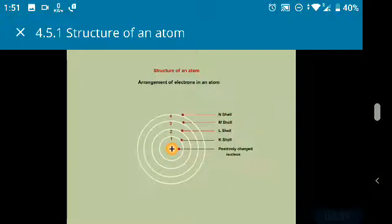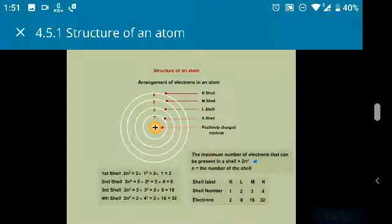The maximum number of electrons that can be present in a shell is given by the 2N square rule where N is the number of the shell. The filling up of electrons in different shells during the 2N square rule may be understood from the table shown here.